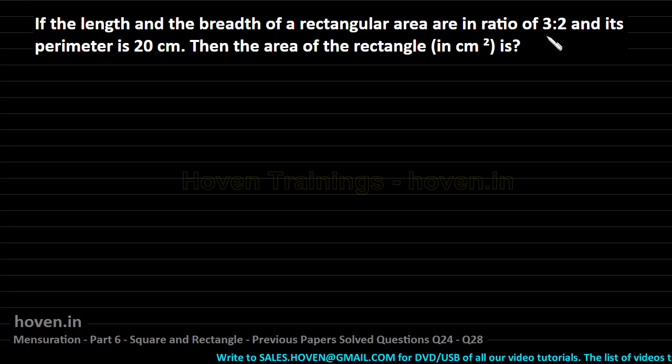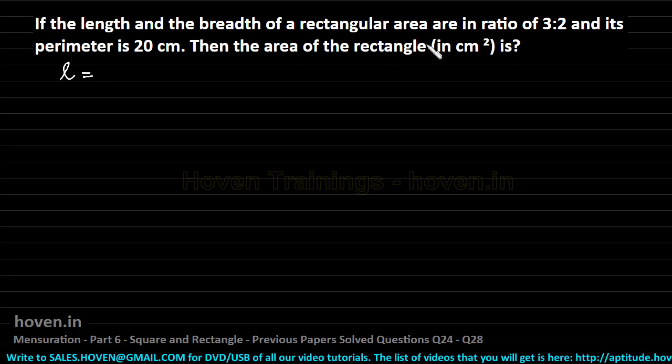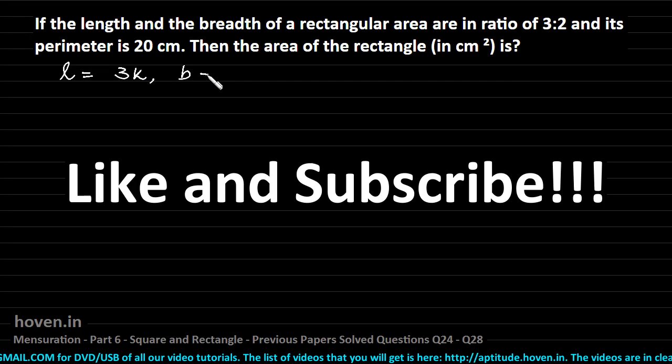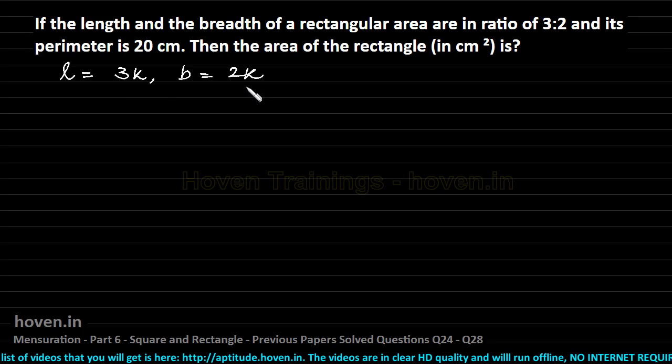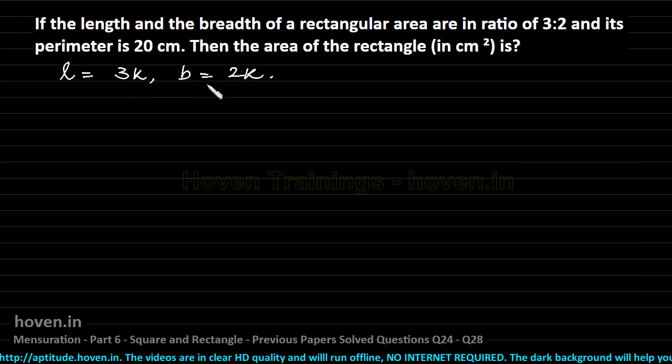Whenever the ratio is given in this form, we can write length l equal to 3k, and breadth b equal to 2k, where k is some constant number which brings length and breadth into the ratio 3 is to 2. This is a property of the ratios that we can write them as 3k and 2k.